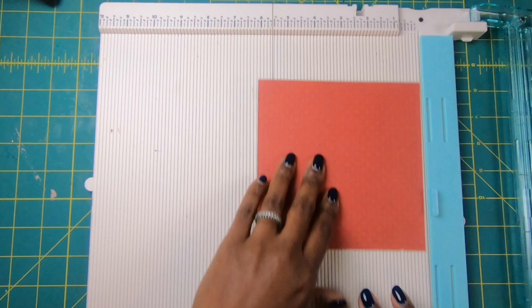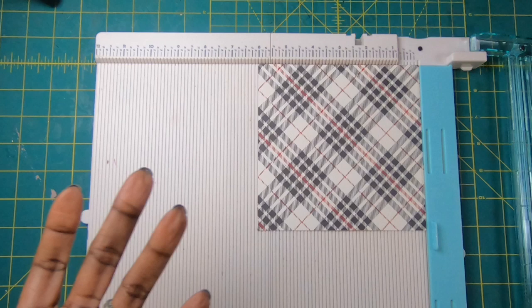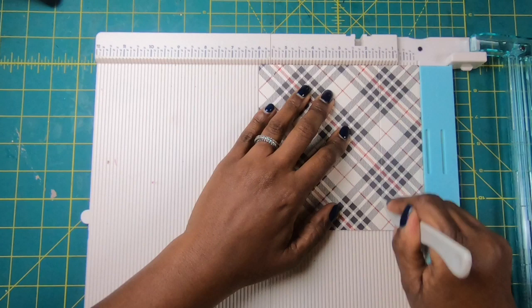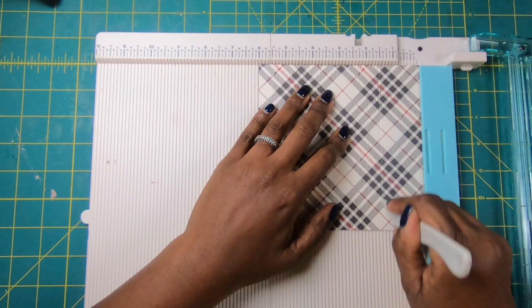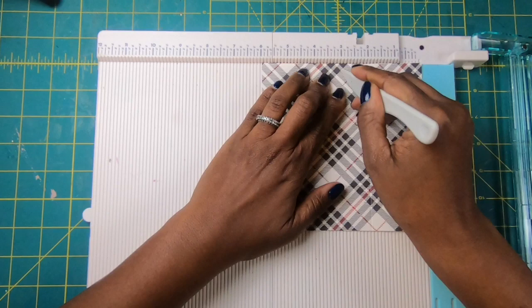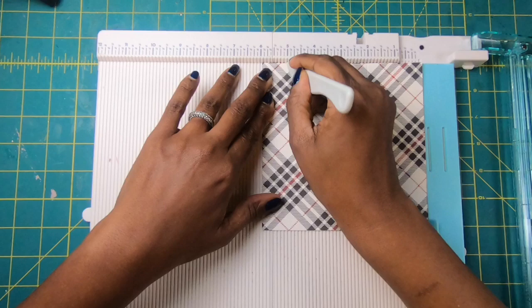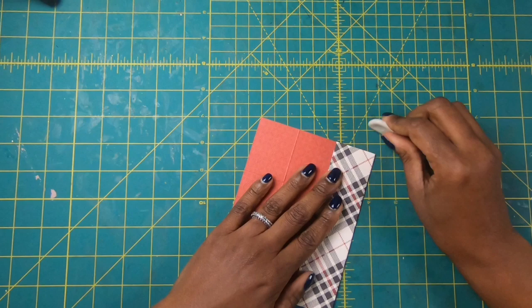This project only takes a 6x6 piece of paper and then some scraps for the side. That means that from one 12x12 piece of paper you can make four purses or if you've got a 6x6 paper pad you can make bunches of purses. Here's how we do it. We have a 6x6 piece of paper. We are going to score this at one and a half. We are going to turn it this way and score it at one and a half again just to make sure everything is nice and even. And then we are going to turn this and score it at two, at three, and at five. And that's it.